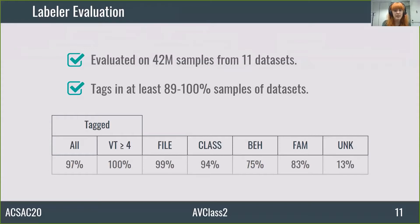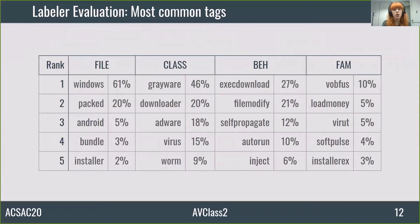It is important to note that the family column considers only samples tagged with families that appear in the taxonomy. However, unknown tags most often correspond to families that haven't yet been added to the taxonomy and should be considered for family tagging results. The top file tags include platforms like Windows and Android, but also whether a sample is packed. Classes capture the popularity of potentially unwanted programs, downloaders, and monetizing through advertisements. The top three behavior tags correspond to expansions from class tags: from downloader to file download, various to file modify, and worm to self-propagate. Top families have lower prevalence than top classes, file properties, and behaviors.